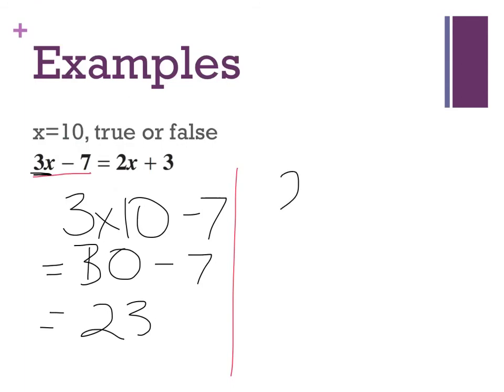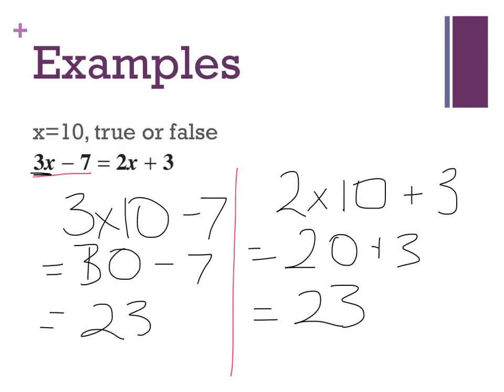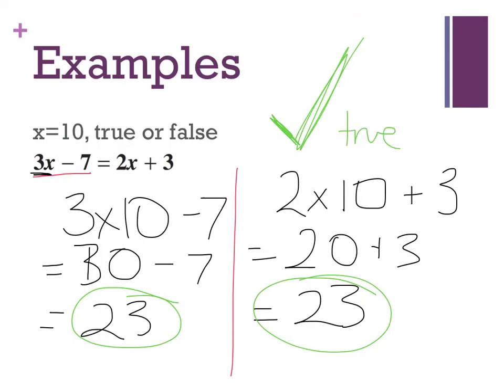My right-hand side: 2 times 2x, or 2 times 10 because multiplication is going on there again, plus 3. 2 times 10 is 20 plus 3, which gives me 23. I have the same number on my left-hand side as I do on my right-hand side, which means my answer for this question—does x equal 10—is true. I know it's true because my equation has balanced.